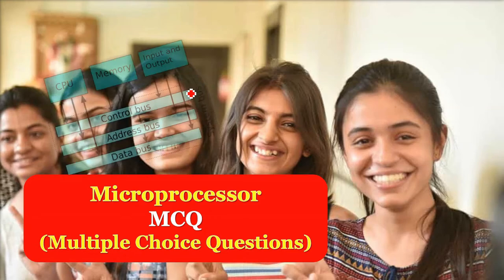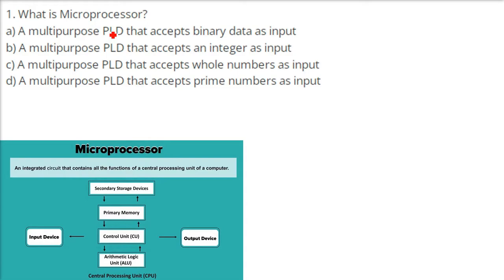We are taking multiple-choice questions on microprocessors. What is a microprocessor? Micro means small and processor means something that takes certain input, processes it, and outputs a result. For example, if 2 and 3 are coming in and you want to add, it will give you 5. If you want to subtract, it gives you negative 1.